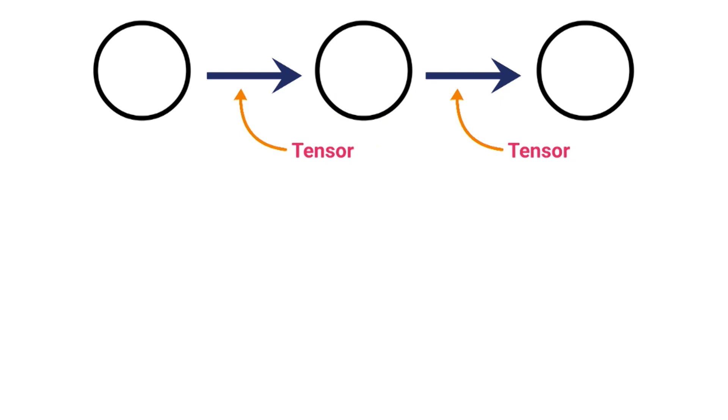We know these arrows are called tensors, and they contain our weights. We know that from the first episode.